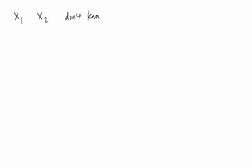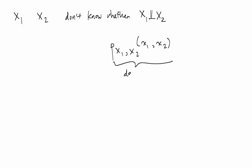Now let's move on to our second example. Suppose we still have random variables x1 and x2, but we don't know whether they're independent or not. Without making any additional assumptions, we're just going to have to look at the full joint probability table, p(x1, x2) of little x1, little x2. This thing depends on random variables x1 and x2. We're now going to introduce notation where we call this psi(1,2) of little x1, little x2.